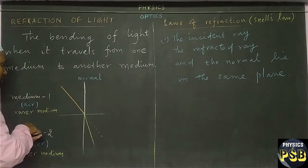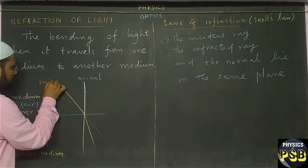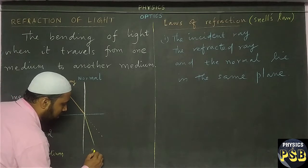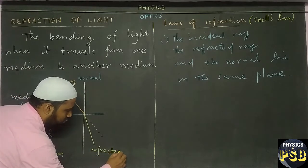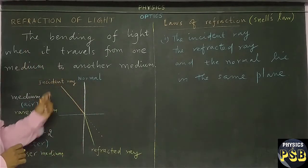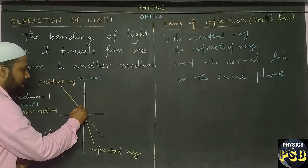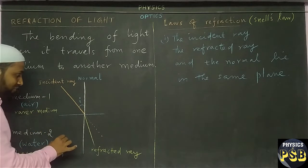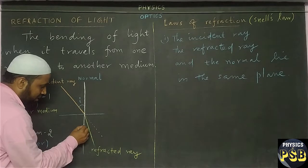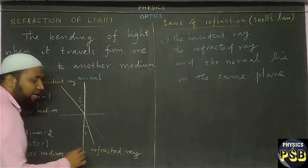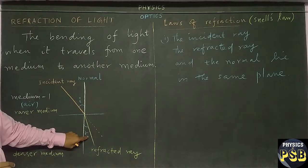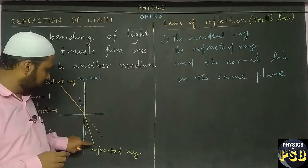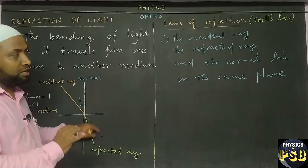Now this ray of light — we call this the incident ray. And this ray is called the refracted ray. The angle between the incident ray and the normal is known as the angle of incidence. And the angle between the normal and the refracted ray is called the angle of refraction, represented by R. Note that in reflection we used R for angle of reflection, but here it is used for angle of refraction — that you need to remember.